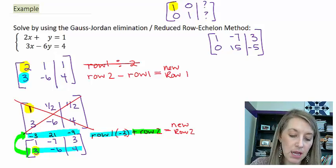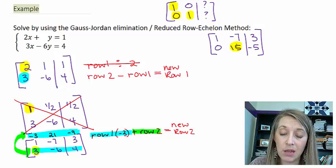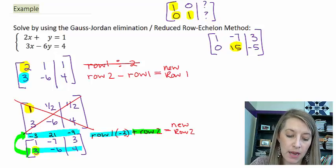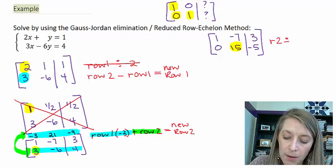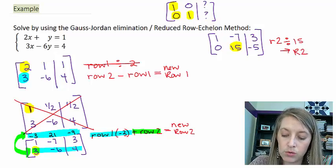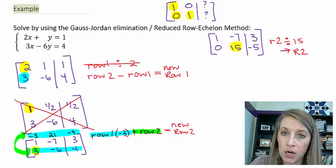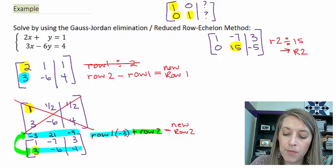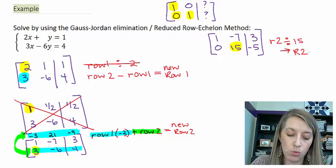The next thing I want to do, if I'm following the same method, is now get a 1 where this 15 is. Typically, when I want to get a 1, I divide that row by that number. So I'm going to take my row 2 and divide it by 15. That's going to be my new row 2. Notice I switched up my notation a little bit here. Whenever I use a lowercase r, that means my old row. Whenever I use a capital case R, that's going to be my new row. So my old row 2 divided by 15 is going to be put into my new row 2.